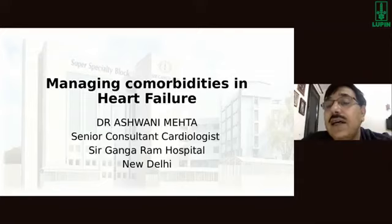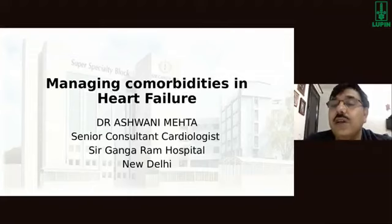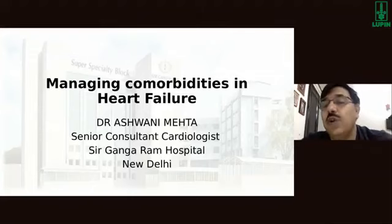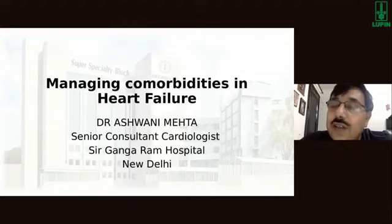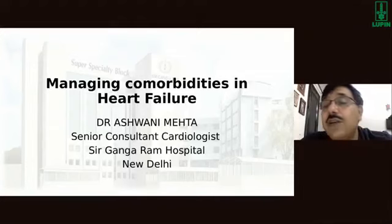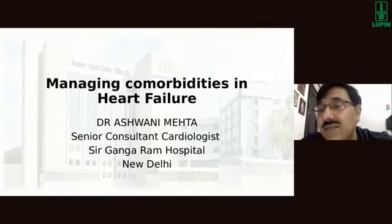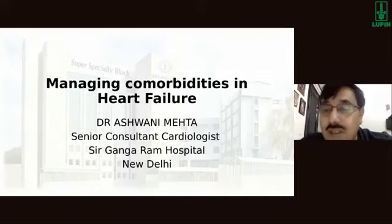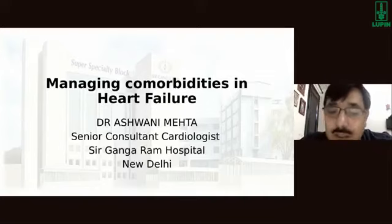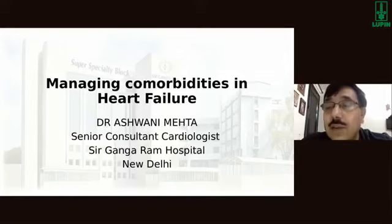Question from Dr. Anand: If a patient is showing good results with sacubitril/valsartan 100 mg without risk of hypotension but has borderline blood pressure, should we still insist on titrating? Yes — we must up-titrate to 200 mg twice daily because the best outcomes are seen with the maximum dose of 200 mg twice daily, and up-titration should be done.